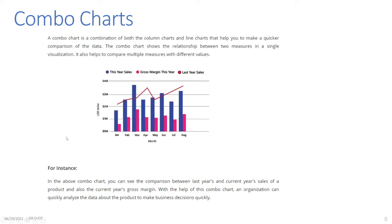Combo Charts: A combo chart is a combination of both column charts and line charts that helps you make a quicker comparison of data. The combo chart shows the relationship between two measures in a single visualization and also helps to compare multiple measures with different values. For instance, in the combo chart shown, you can see the comparison between last year's and the current year's sales of a product and also the current year's gross margin — blue represents this year's sales and red represents last year's. An organization can quickly analyze product data to make business decisions.